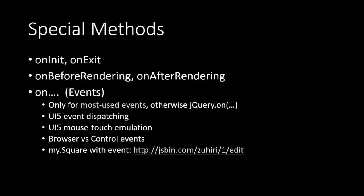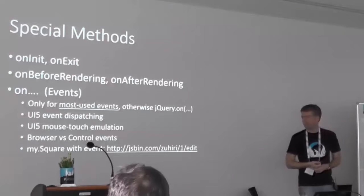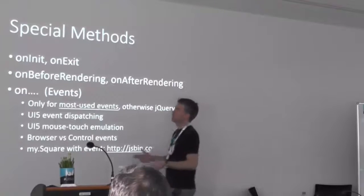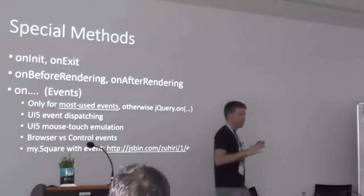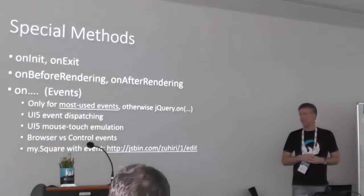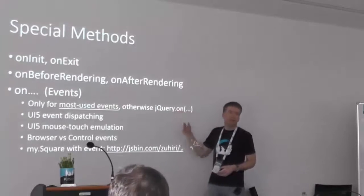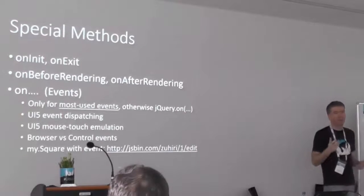When implementing controls, there are lifecycle methods: onInit and onExit — called when the control is instantiated or destructed, for initialization and cleanup. onBeforeRendering and onAfterRendering are called right before or right after the renderer method, in case you want to clean up custom event handlers, add event handlers, or do size adaptations after rendering. Most events can be handled in your control by writing onSomething, like onClick in the square we saw. UI5 registers handlers at the root element for all important events, but for some — like mousemove, which fires all the time — it doesn't, so you can use jQuery.on or jQuery.bind to bind your own event handlers.